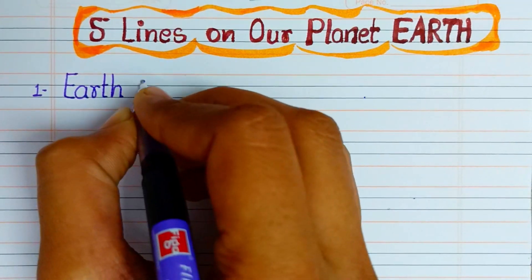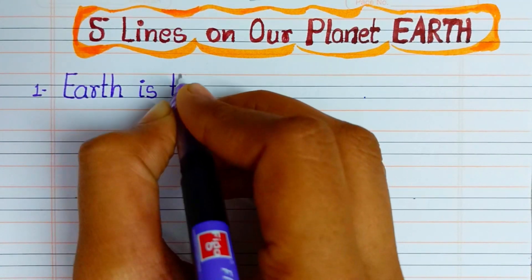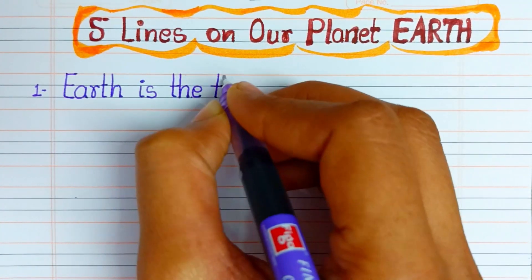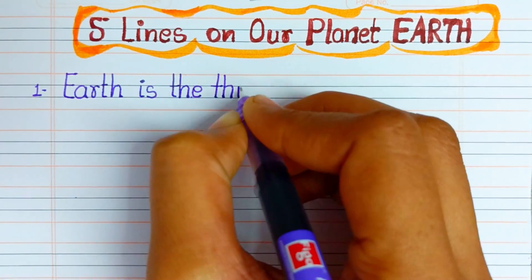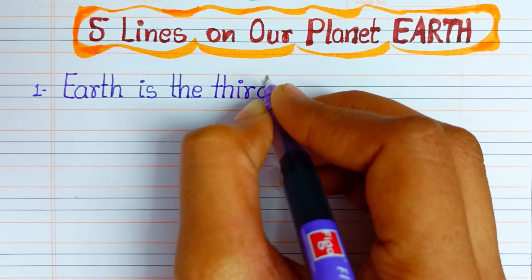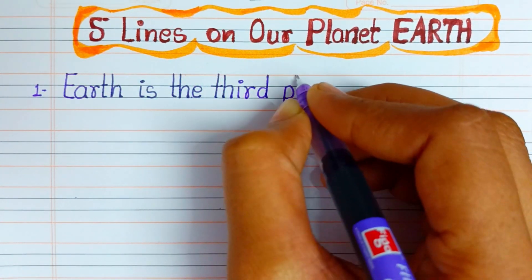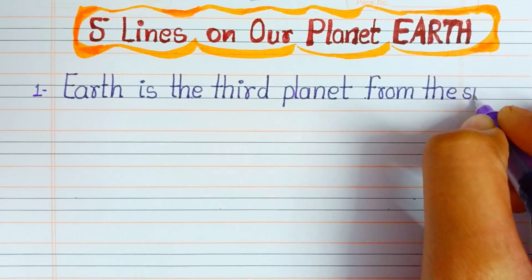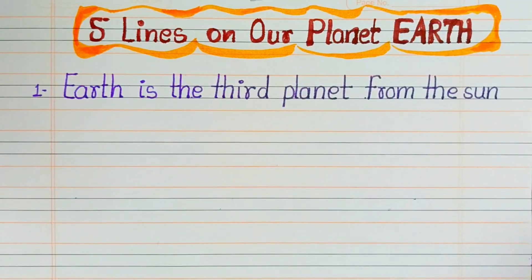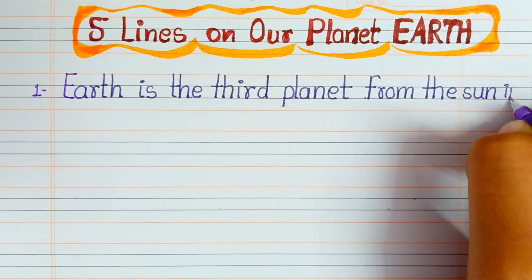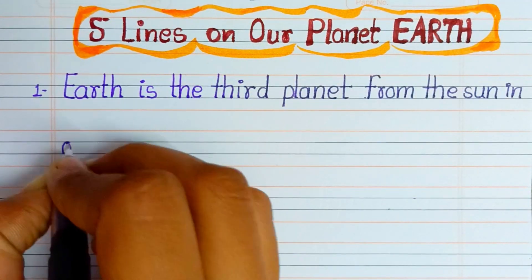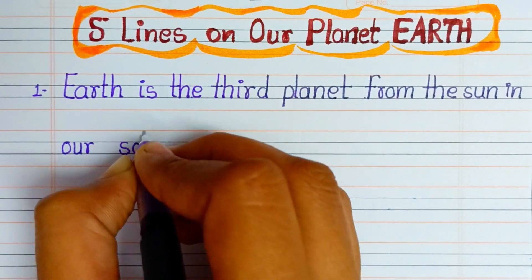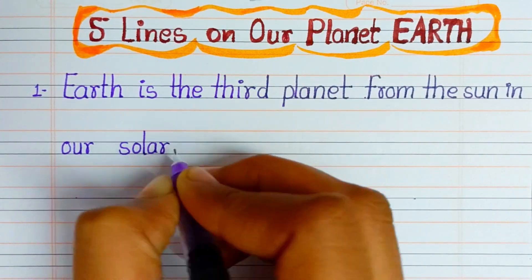Earth is the third planet from the Sun in our solar system.